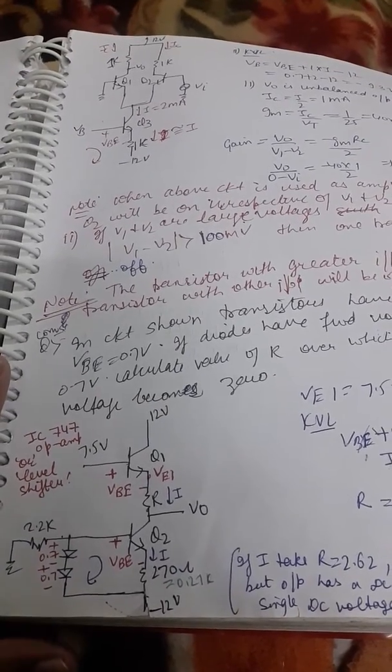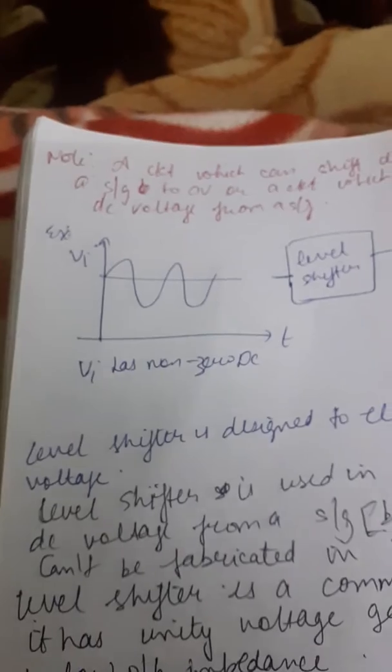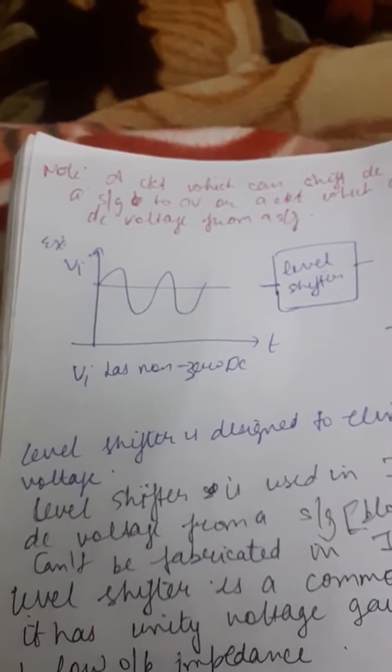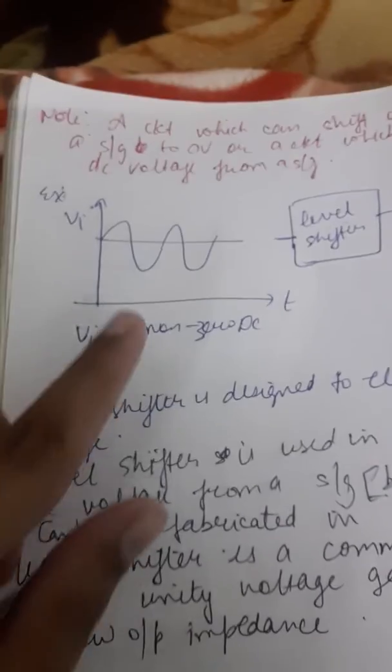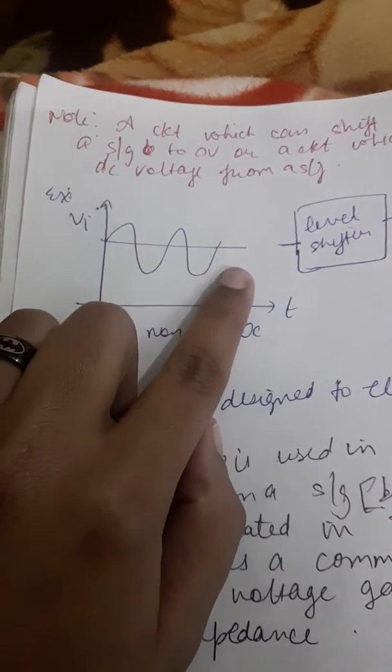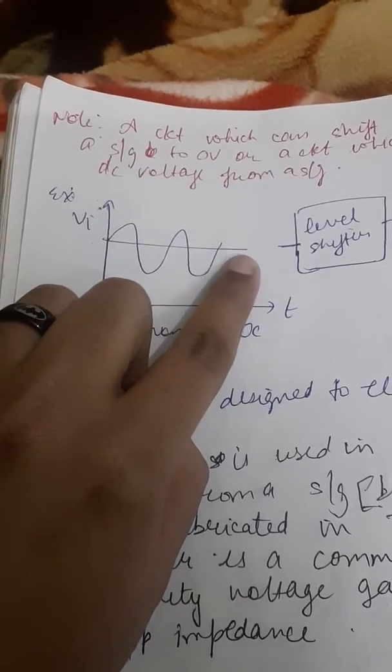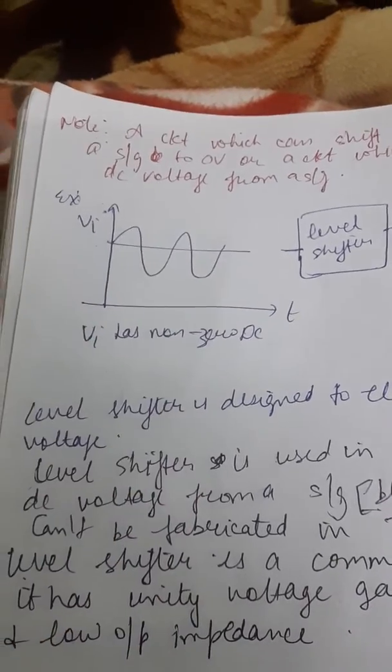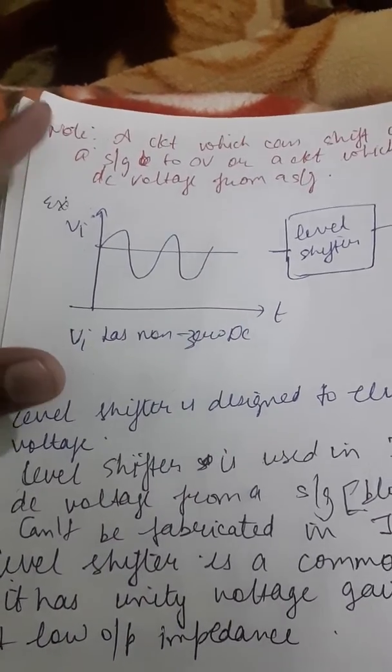Now what is the function of a level shifter? As you can see here, this is an input. This input value has a DC component here. How can you see? You have this DC value, average value, that is called DC value. You have DC input here, so this input has non-zero DC.